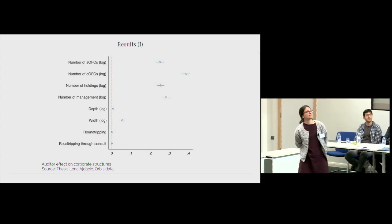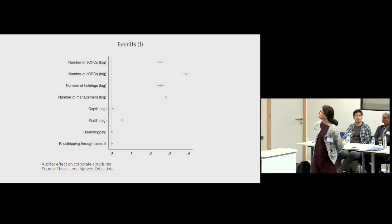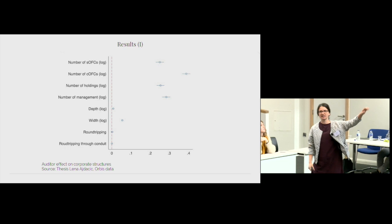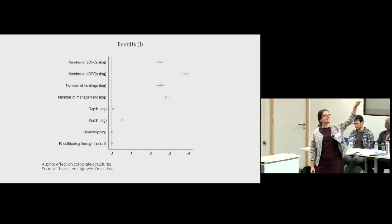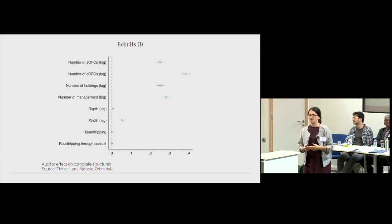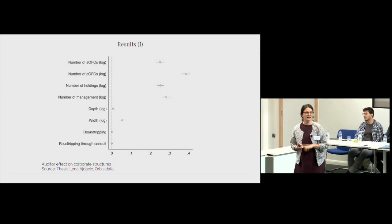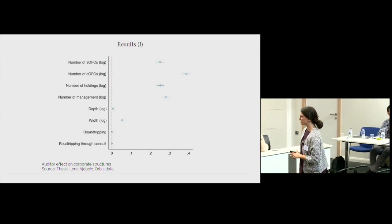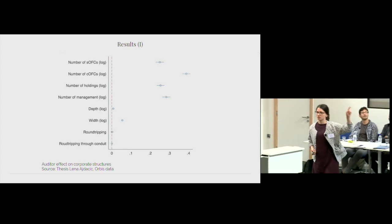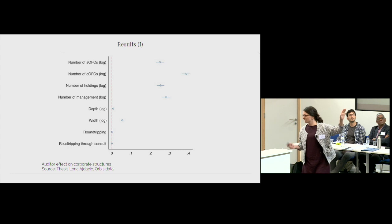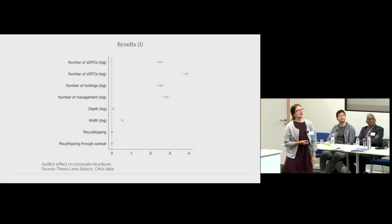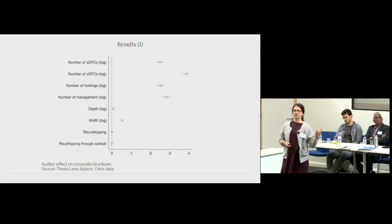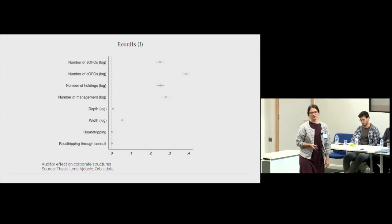These are the main results. What you see here are the coefficients of the auditor effect. So what you can basically imagine is behind each of these lines is a regression model. We ran the regression while controlling for the size of the company, the place of incorporation, the sector, and the age. And this is then the influence of the auditor if you control for all of these other things. What we find is that the auditor, whether you're audited by one of the big four or a smaller auditor, matters for these top four features and for the width.